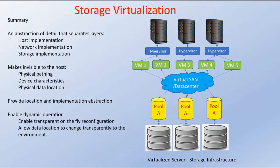In summary, storage virtualization is an abstraction of details that separates the layer of host implementation, network implementation, and storage implementation. Virtual machines VM1, VM2, VM3, VM4, and VM5 are directly connected to this virtual SAN. They have no idea how this virtual SAN is connected to the storage devices, so it is abstracting the host or virtual machine storage connectivity implementation. Storage virtualization also makes invisible to the host the physical pathing, device characteristics, and physical data location. The virtual machines are only connected to the virtual SANs, and the virtual SANs are connected to the storage devices through the pools.